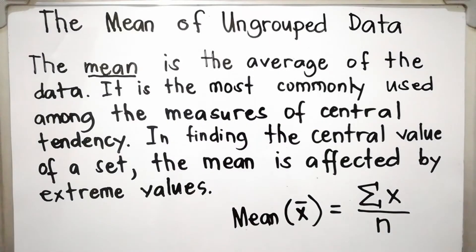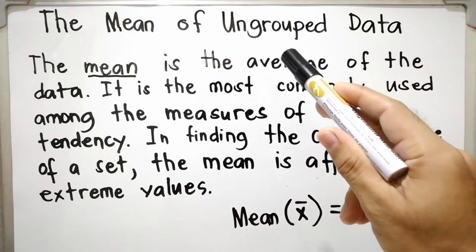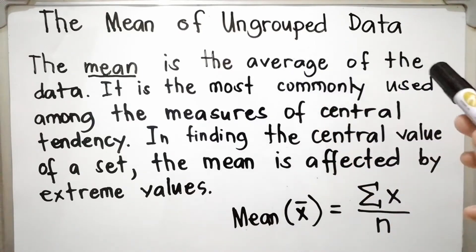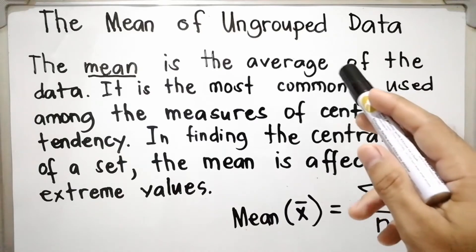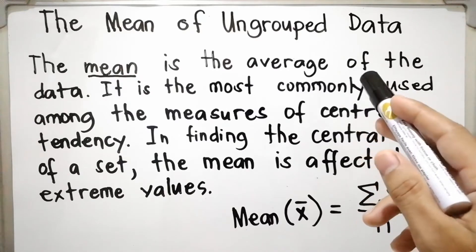Hi everyone, today we will talk about the mean of ungrouped data. Ungrouped data meaning the data observations are not arranged in a frequency distribution table. Mostly, the number of observations are less than 30.